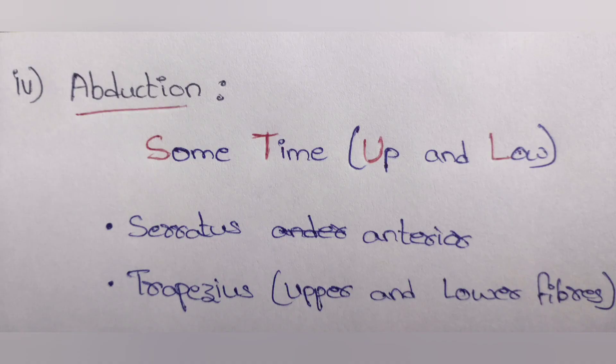The next movement is abduction. The mnemonic is 'many sometimes up and sometimes low': M for serratus anterior, T for trapezius muscle — with upper and lower fibers of trapezius in brackets for 'up' and 'low' respectively. This is the mnemonic for abduction of the shoulder joint.